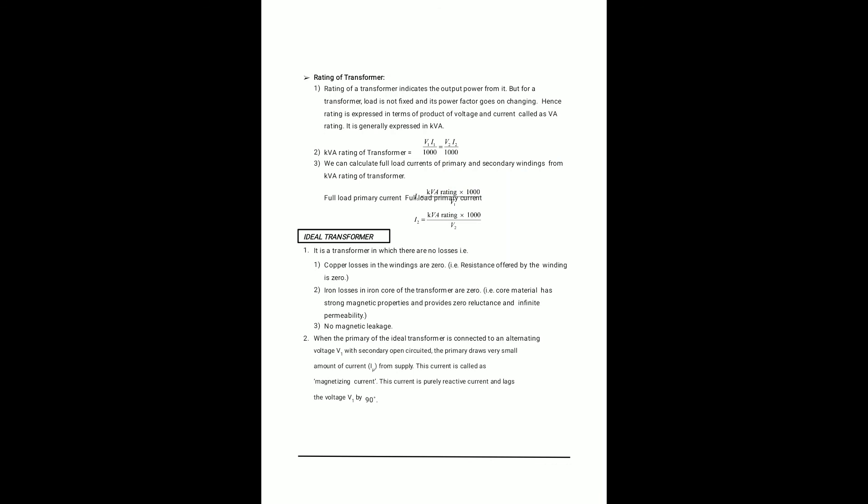The rating of a transformer indicates the output power. Since the load and power factor can change, the rating is expressed as the product of voltage and current, called the VA rating, expressed in KVA. KVA = V1 I1 / 1000 = V2 I2 / 1000. The full-load primary current I1 = KVA rating × 1000 / V1, and the full-load secondary current I2 = KVA rating × 1000 / V2.